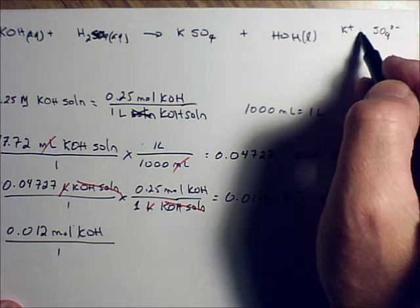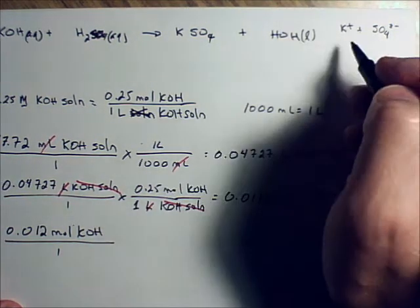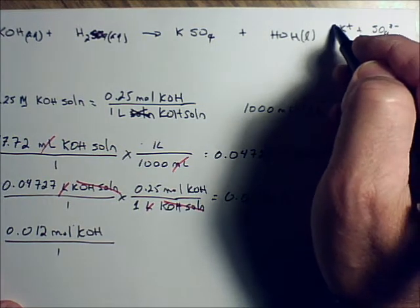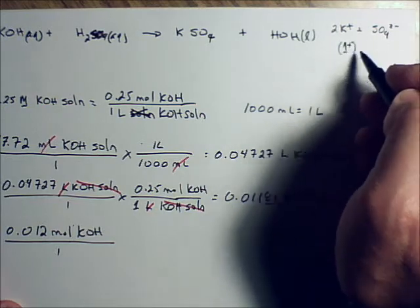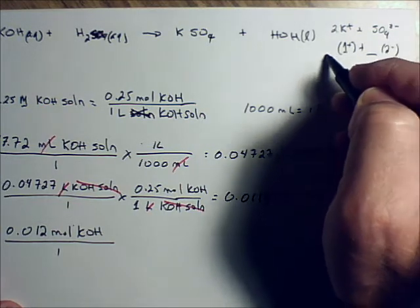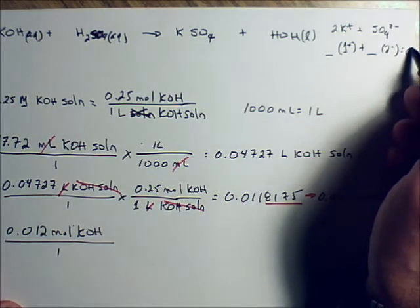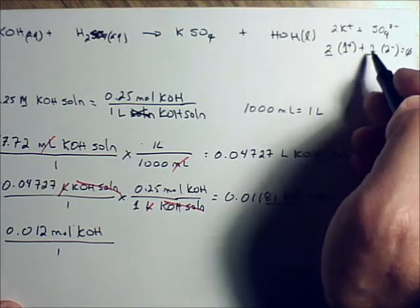So how many of each of these do I need? I need two potassiums. If you don't know how that works, we put a one plus here and a two negative here, and we figure out what coefficients need to go in front to get this whole thing to equal zero. And so we do need two of these and one of these.